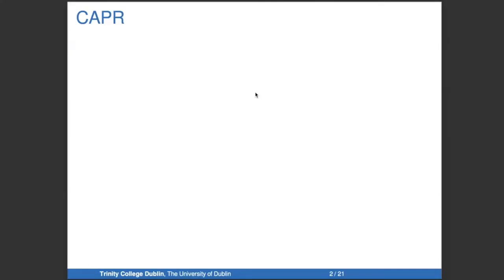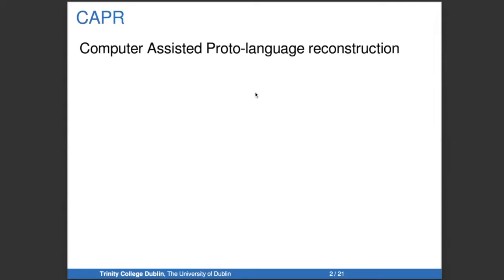The first thing I'm going to discuss is how I have done this work, because I'm using a new tool that we call CAPER — it stands for Computer-Assisted Proto-language Reconstruction. It was initially built by Shun Gong in 2020 when he was working with me in London as part of an ERC project, and we were specifically looking at the reconstruction of Proto-Burmish.